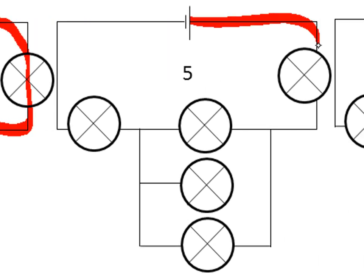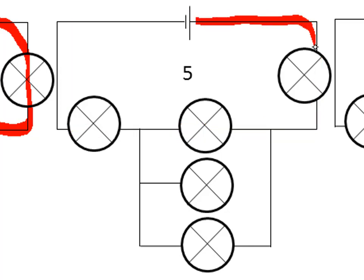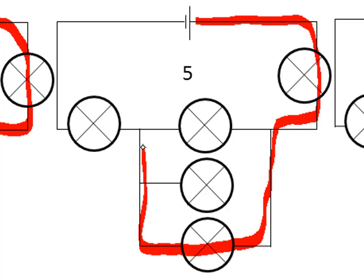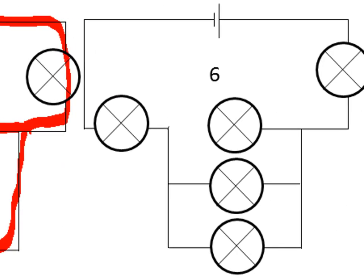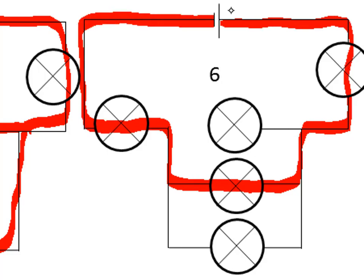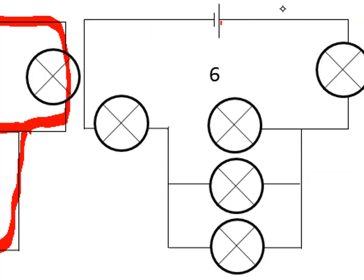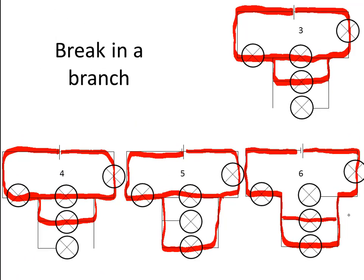In circuit five, from positive we have a complete path through those three bulbs, and also a complete path through that one bulb back to the main and to the negative terminal. So those bulbs will light up, but not the middle bulb. In circuit six, from positive through one bulb and through that middle branch back through the main to negative — those three bulbs will shine. There's also another option through the bottom branch. So all bulbs with a complete circuit through them will shine, and those without will not.